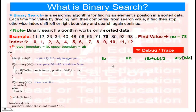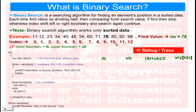Looking at the code, we have a few variables: LB means lower boundary, UB means upper boundary. We calculate lower boundary plus upper boundary divided by 2, and this value is assigned to the IDX variable. On this index, we check what value is present, as shown by the debugger.